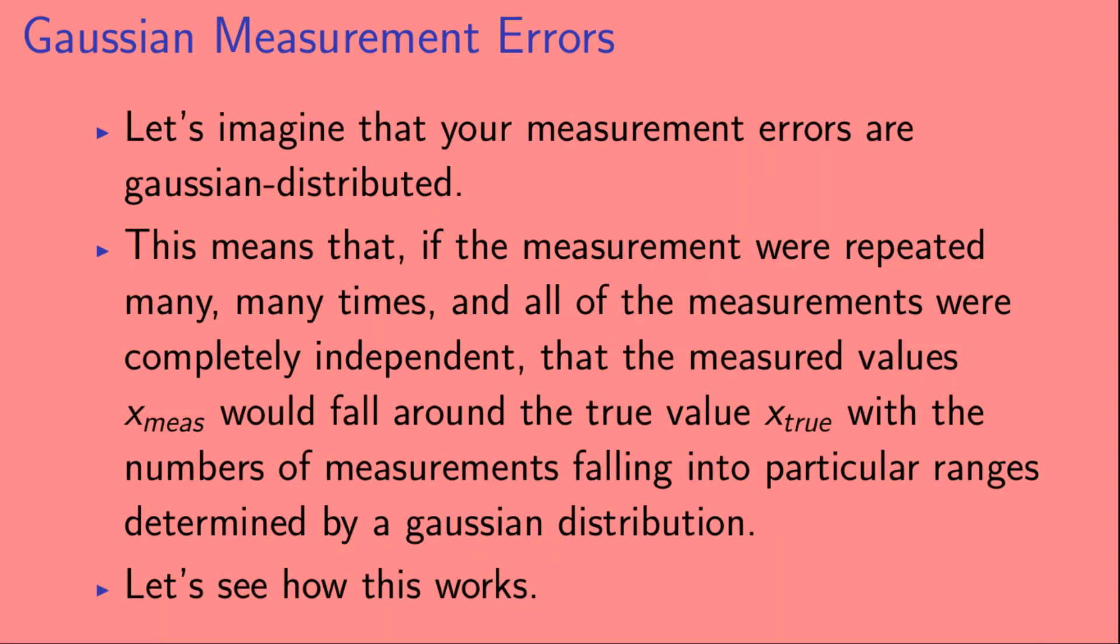Let's imagine that your measurement errors are Gaussian distributed. This means that if the measurement were repeated many, many times, and all of the measurements were completely independent, that the measured values, x_meas, would fall around the true value, x_true, with the numbers of measurements falling into particular ranges determined by a Gaussian distribution. Let's see how this works.